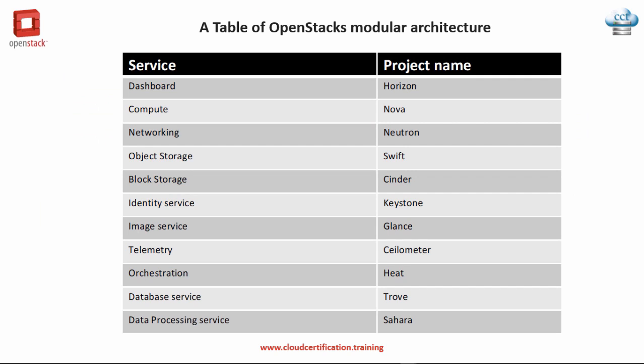This is just a slightly different view of what we just talked about — it's the same information presented as a table. We have the different services: Dashboard with project name Horizon, Compute which is Nova, Networking which is Neutron, Object Storage which is Swift, Block Storage which is Cinder, and so on. There are also a couple of things that weren't listed in the previous diagram, such as Trove and Sahara, which we will touch upon as well.